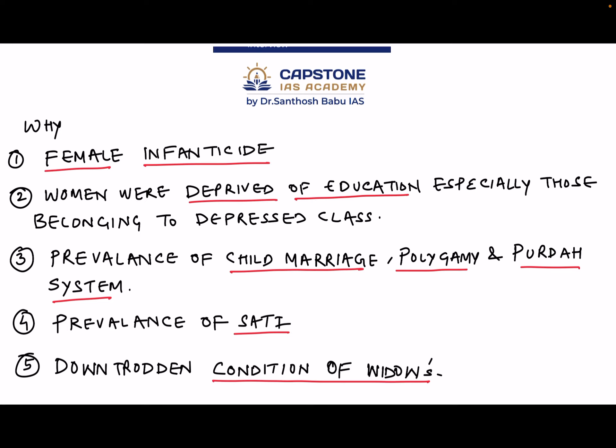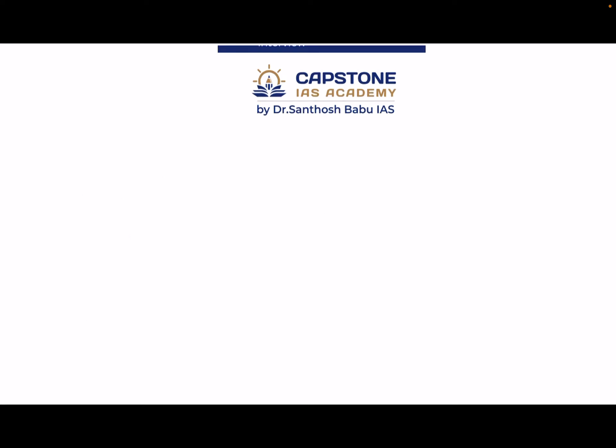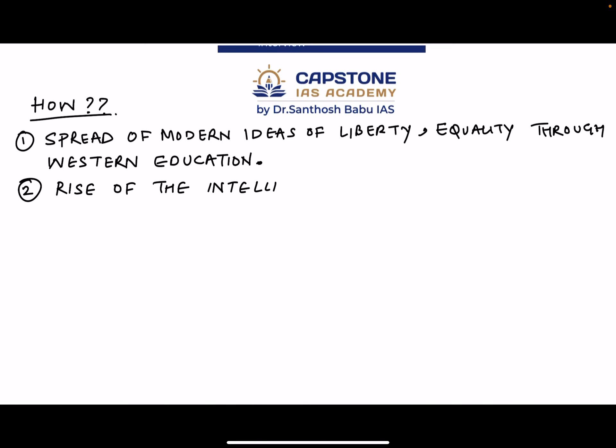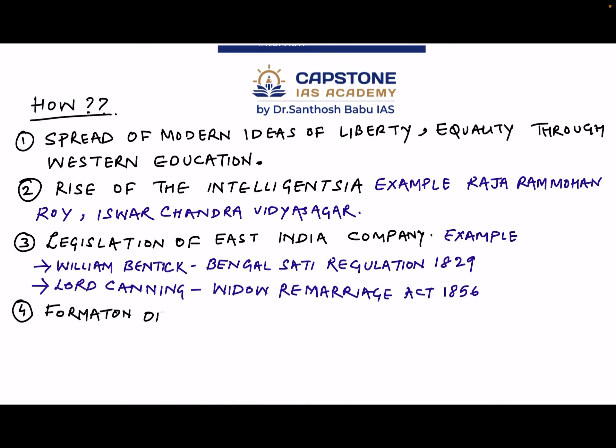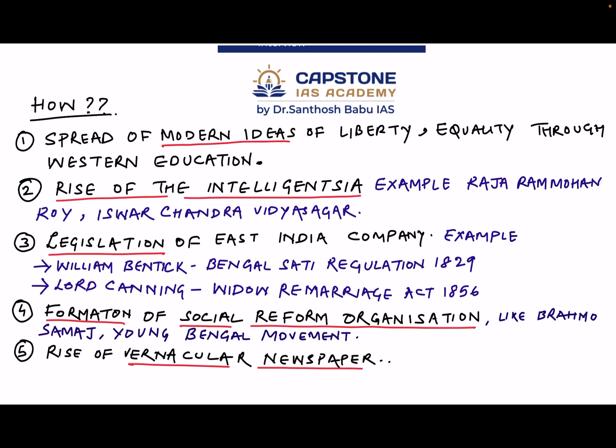Having addressed the five points of the 'why' part, we now move on to the 'how' part — that is, how did it take place. First of all, it was the spread of modern ideas — ideas of liberty and equality — which spread through the western education that was introduced in India.